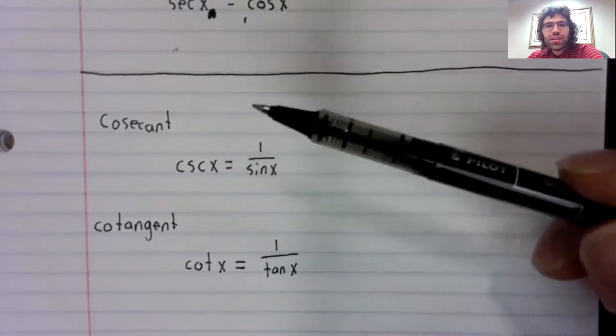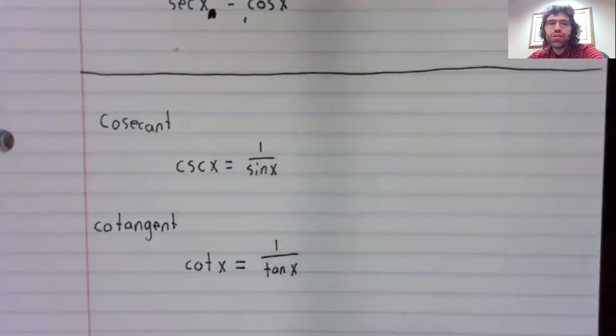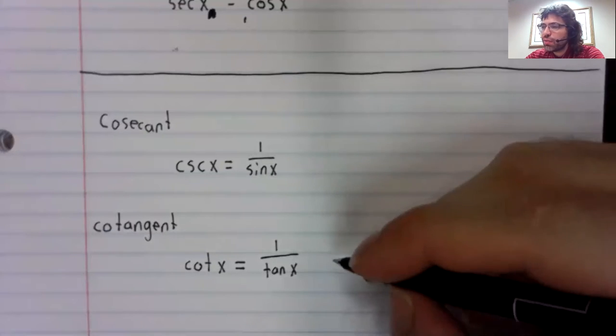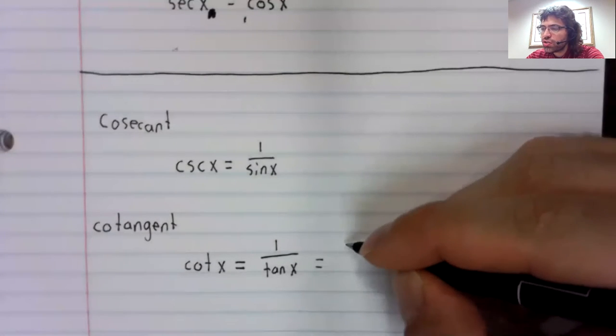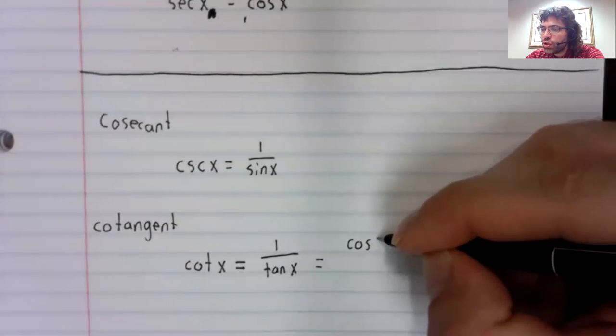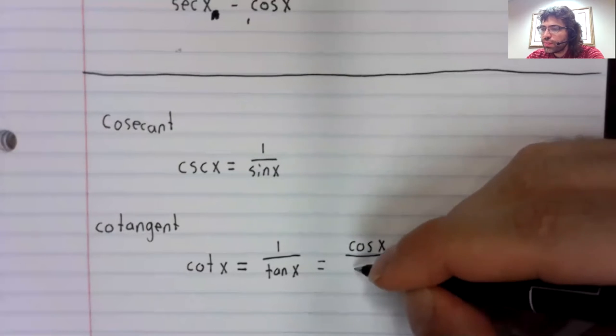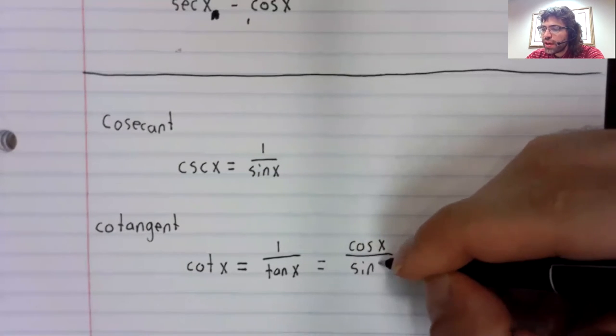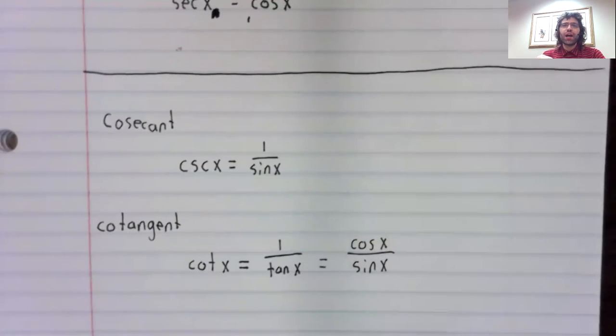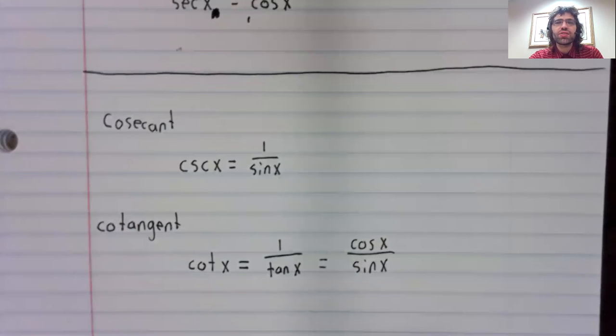The cosecant is not one divided by the secant. The cotangent is one divided by the tangent, which you could also write as the cosine divided by the sine.